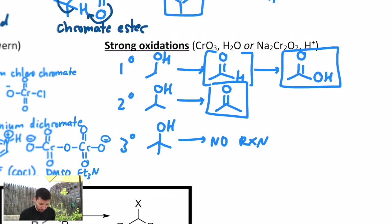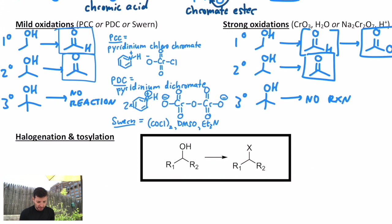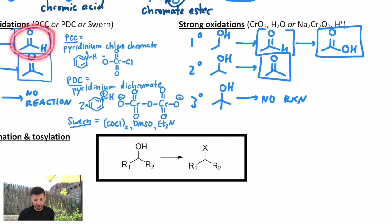So even though there's a variety of different reagents you might see that do oxidations, the only one to watch out for is what happens with a primary alcohol. A mild oxidizing agent will stop at the aldehyde, or a strong one will go all the way to the carboxylic acid.